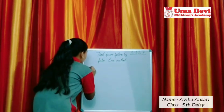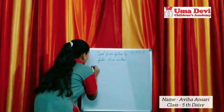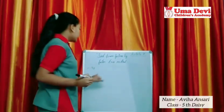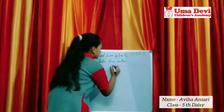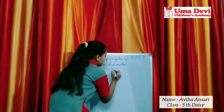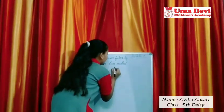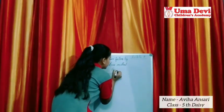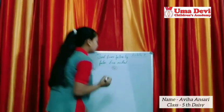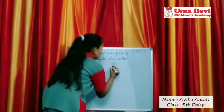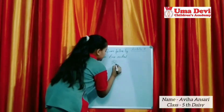Here I am taking 98. First of all, we have to write 98 here and make a circle around it. Then we make two lines here.